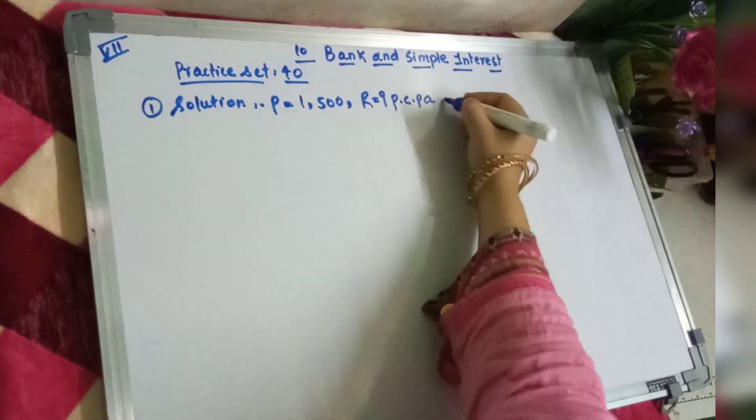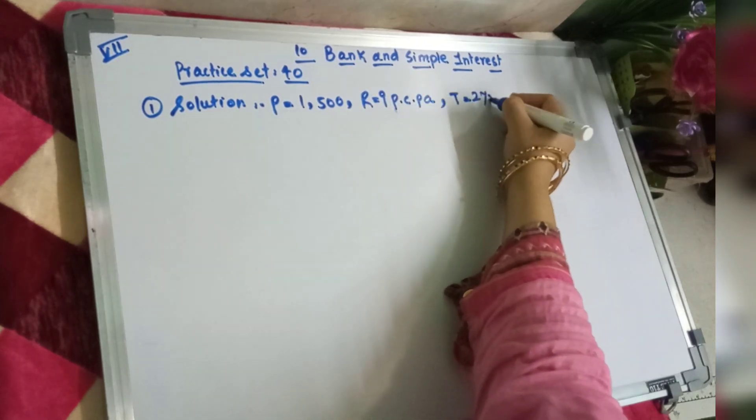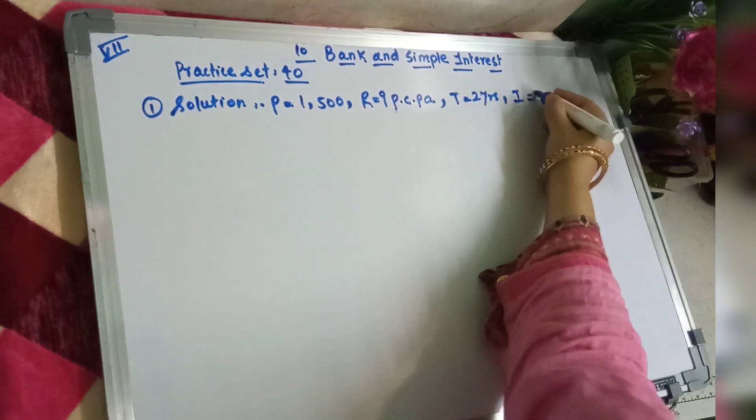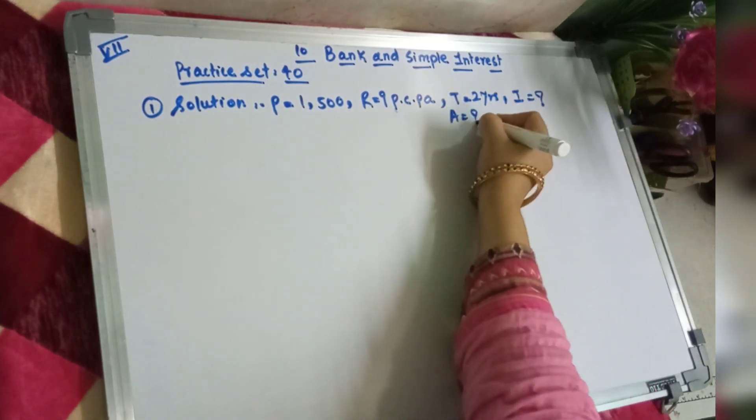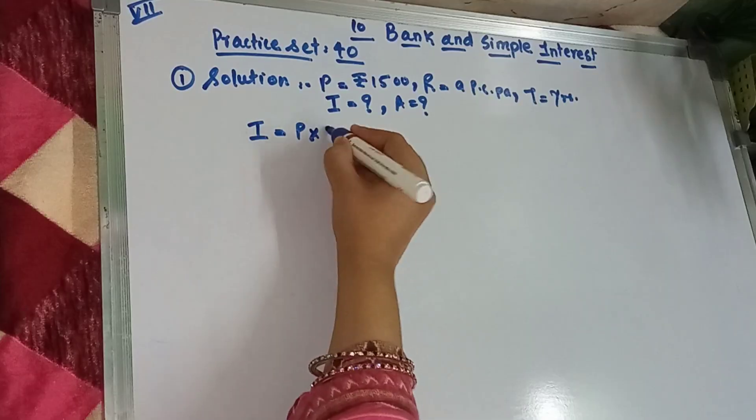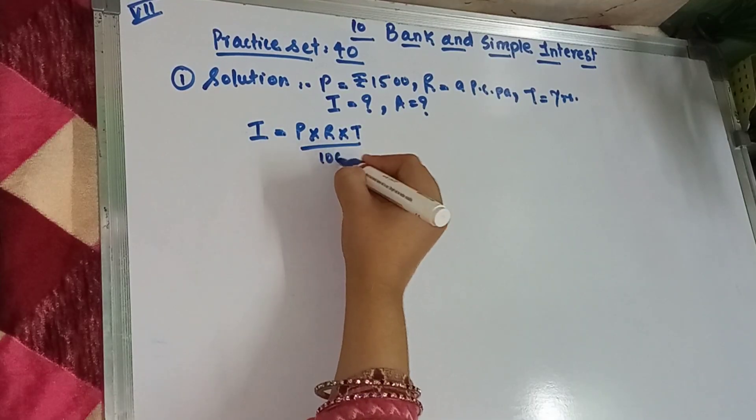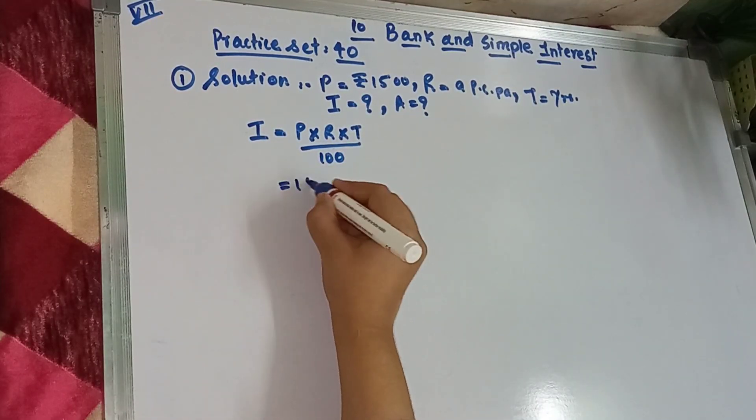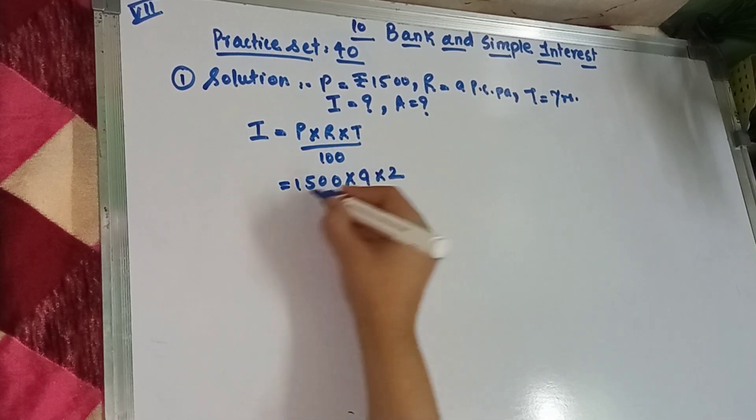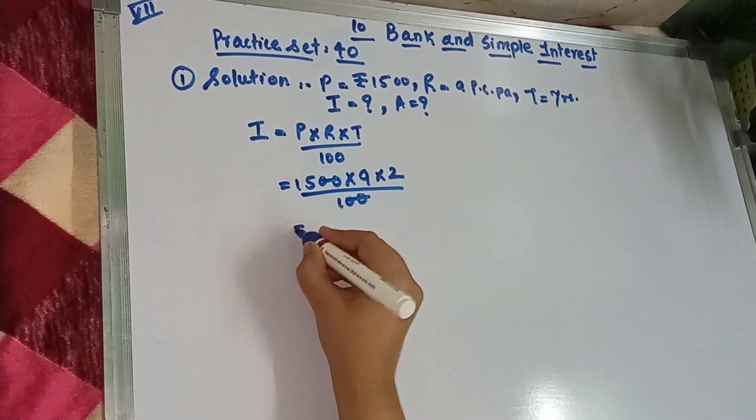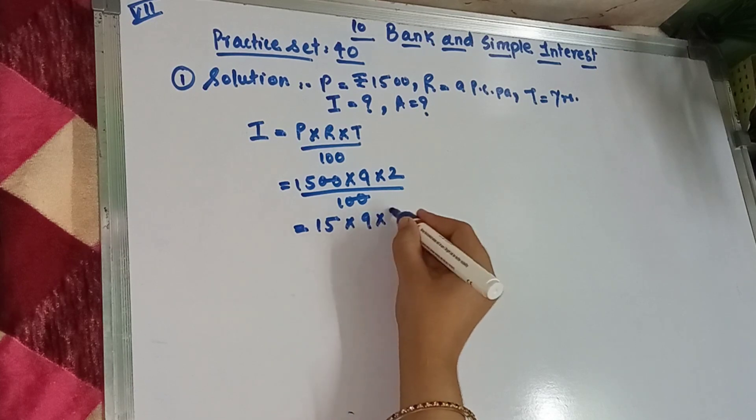Hum logon ko interest find out karna hai and amount find out karna hai. Interest ka formula hai PRT upon 100. P ki value hai 1500 into R hai 9 and time hai 2 years. Then iska answer hai aapka 270.